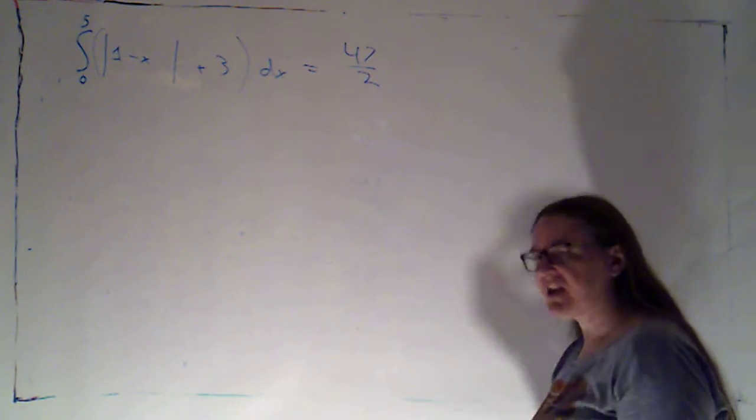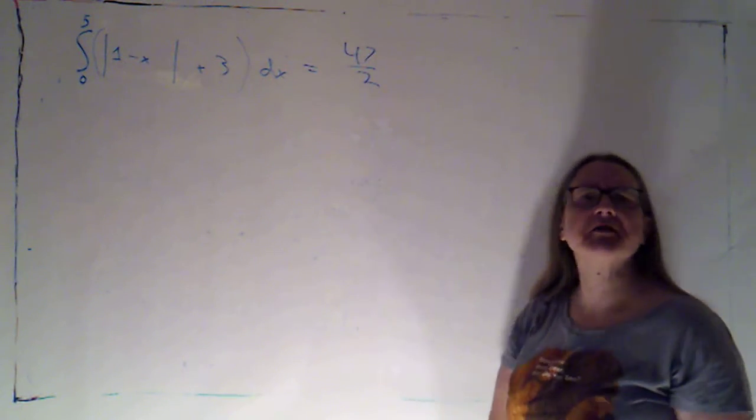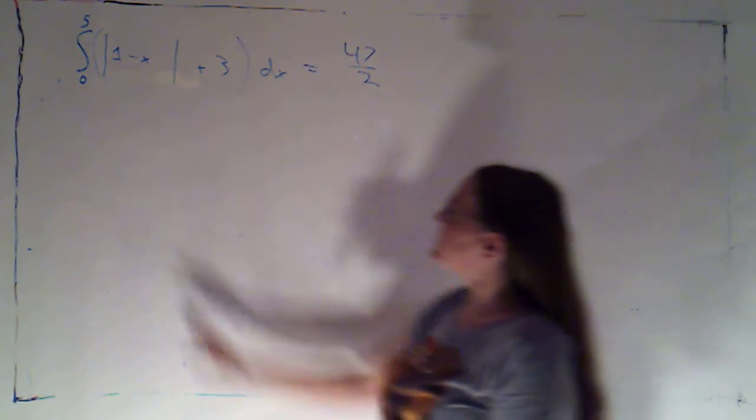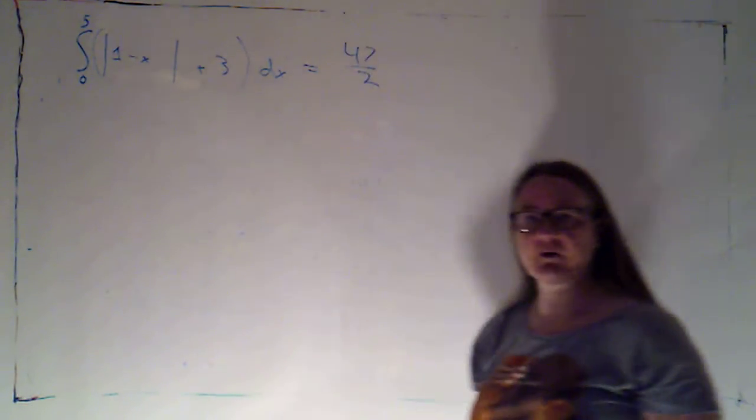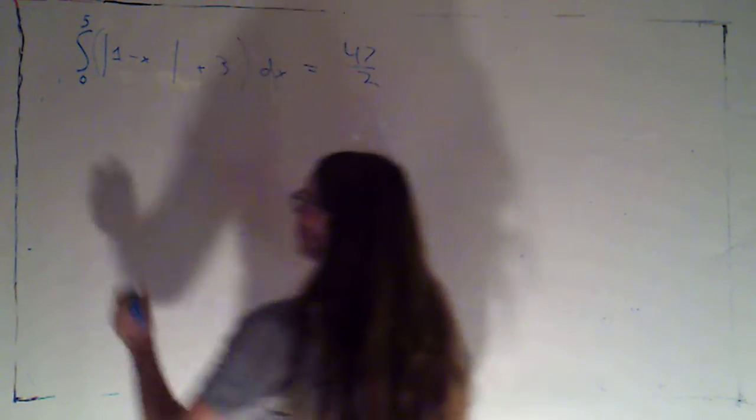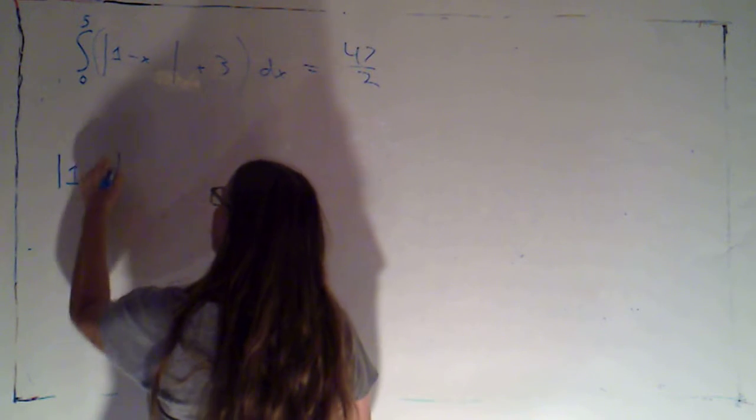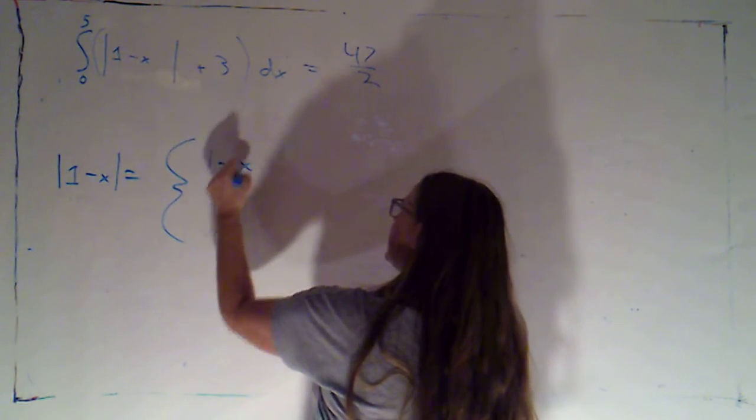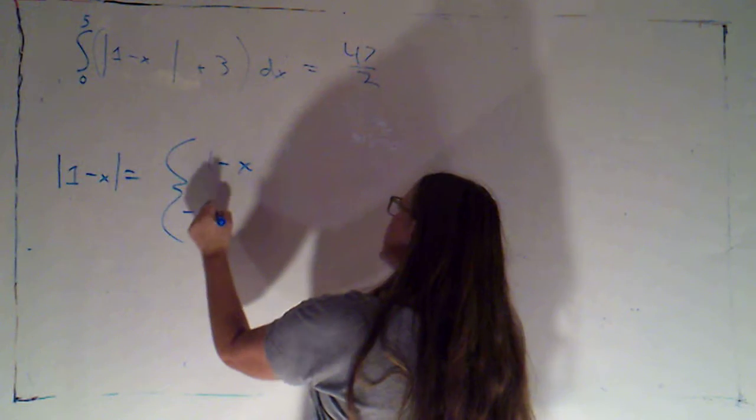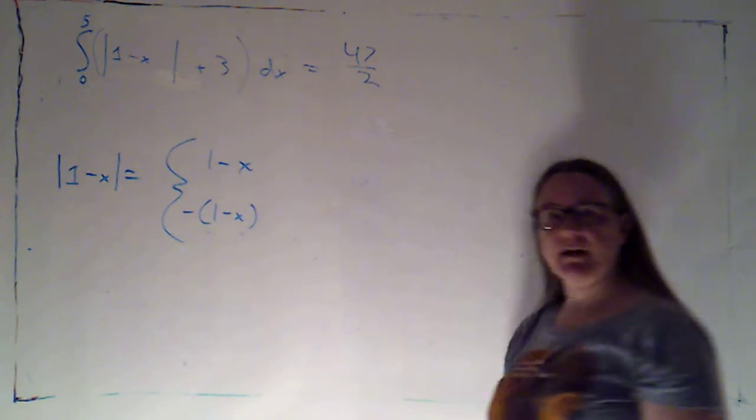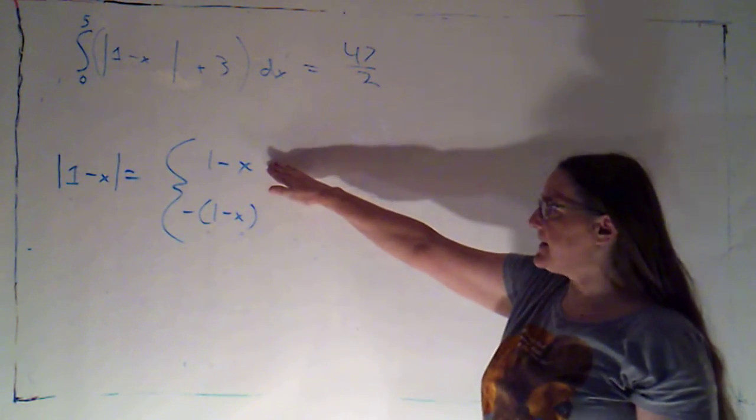Alright, so anytime I have an absolute value I know I want to write that piecewise. So I'm going to just focus on that piece first and say the absolute value of 1 minus x is going to be one of two things: it's either 1 minus x or it's the opposite of 1 minus x. It's what's inside the absolute value if that quantity is not negative; it's the opposite if it is.